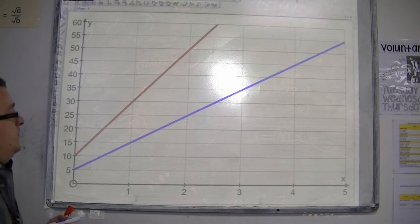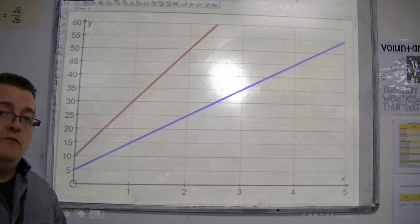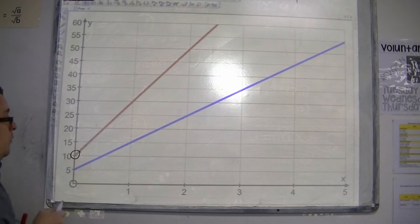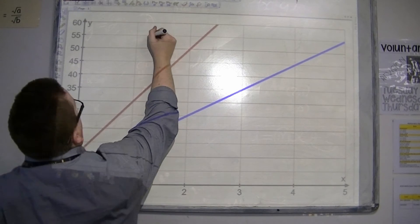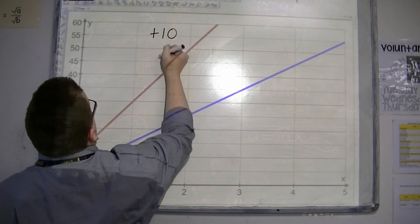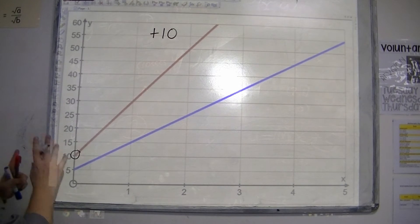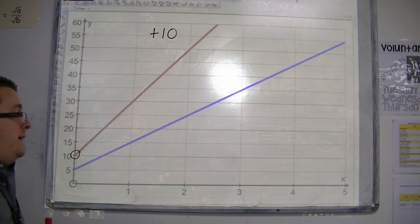The red line, the two important bits of information I need is where it crosses the y-axis, and it's crossing it at 10, so it must be plus 10 on the end. And I also need to know what the gradient is.